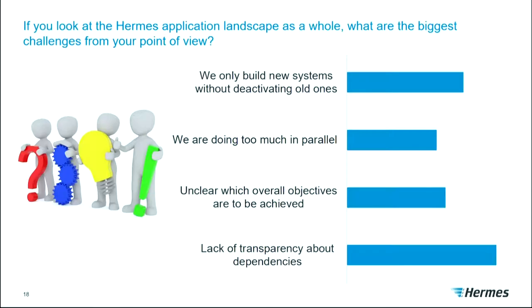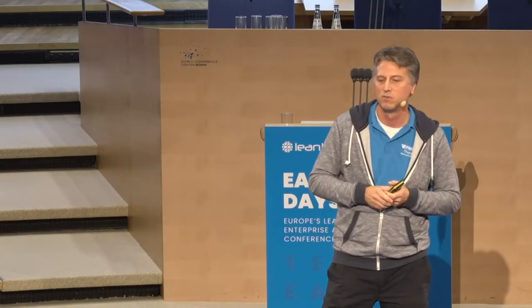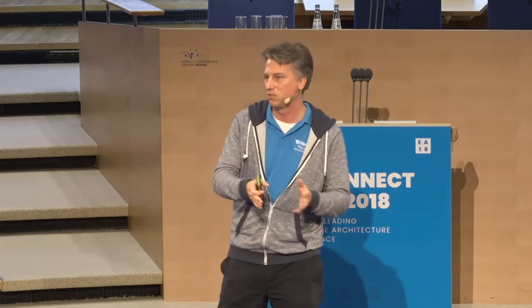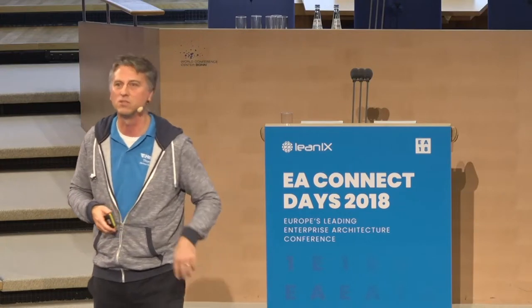What you can see is that the current landscape was much more addressed than the target. Then we asked about the biggest challenges and problems today. We are good at Hermes at building new systems, but the old ones are still running — so it's getting more complex with new systems added in parallel. And we have a lack of transparency about dependencies, mainly around interfaces. When you replace a system, every project has to spend the first weeks doing its own documentation, which ends up on a file server and is never used by the next project.